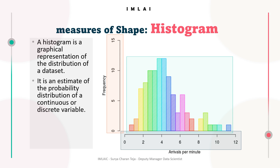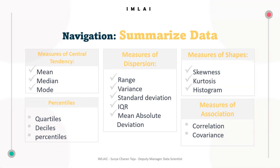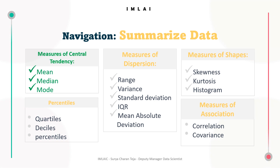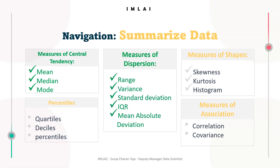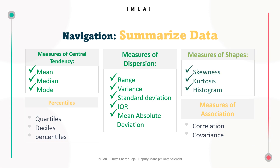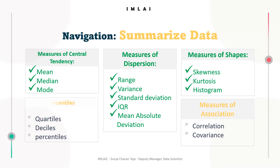After looking at the histogram, skewness, and kurtosis, we are done with measures of shape. Before we jump into another tool for summarizing data, let's look at a navigational map. We are done with measures of central tendency — mean, median, mode — then we moved on to measures of dispersion and variability: range, variance, standard deviation, interquartile range, and mean absolute deviation. Then we jumped into measures of shape, finishing with skewness, kurtosis, and histogram.